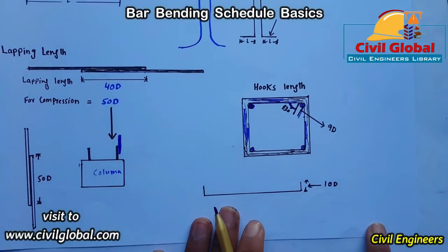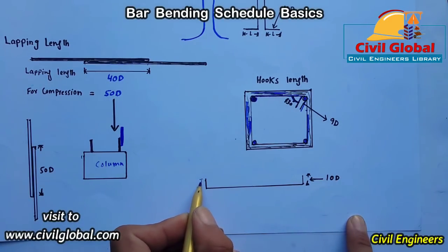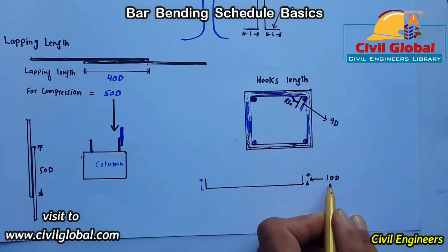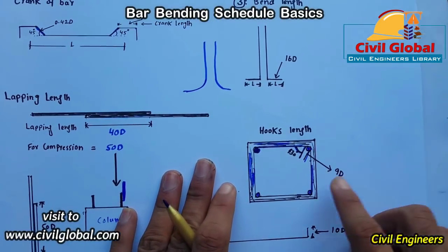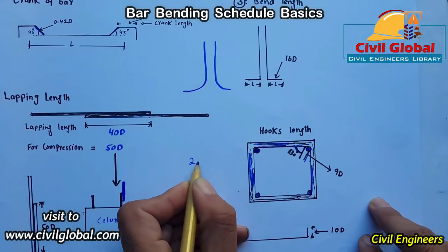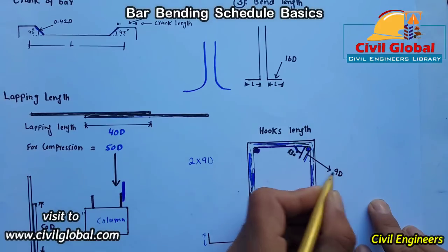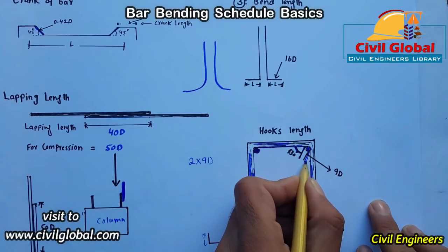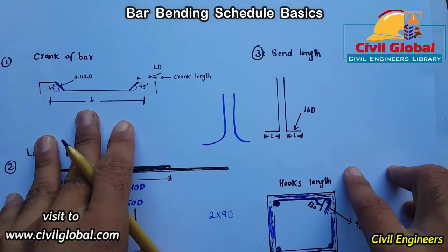We can also provide a bend length of 10D, used in column footing and beams. If you want to find the total length of two hooks, use the formula 2 × 9D, where D is the diameter of the stirrup and 9 is the constant — one hook on each side. This covers the important basics and key points of bar bending schedule.